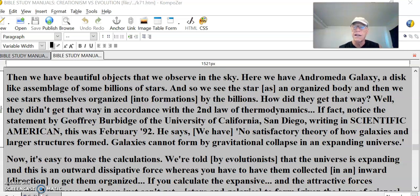Now we're looking around the universe to find some signs of a creator or an evolver. We have beautiful objects that we observe in the sky. Here we have Andromeda, a galaxy, a disk-like assemblage of some billions of stars. We see the star as an organized body, and then we see stars themselves organized into formations by the billions. How could that evolve? How did they get that way?